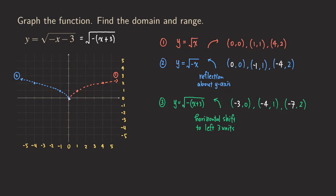We move this point one, two, three — so this point now goes here. Then this point, one, two, three — so we get this point. We also move three units to the left for the third point, but we don't have that on screen, so we don't need to worry about it. The shape is going to look like that — this is our final graph, drawn with a solid curve.